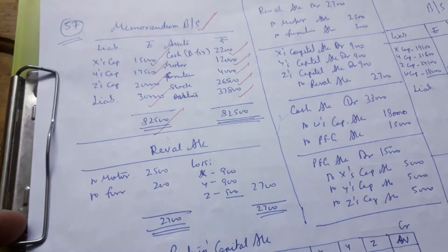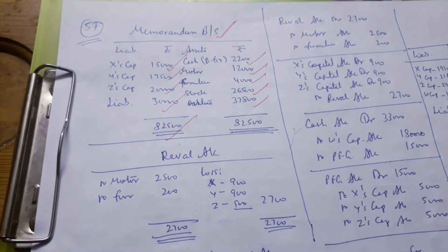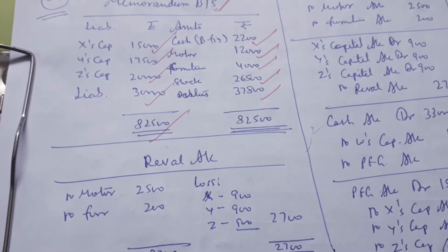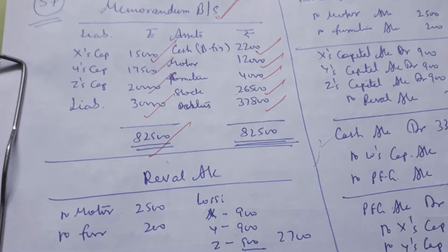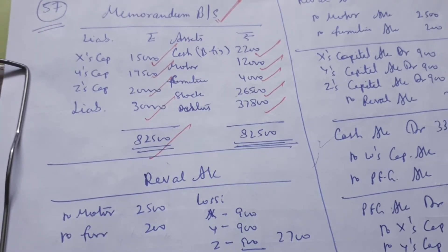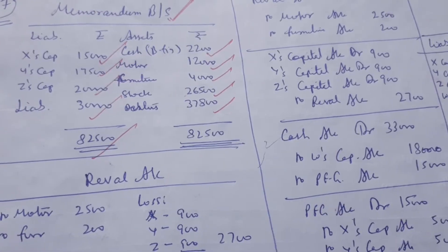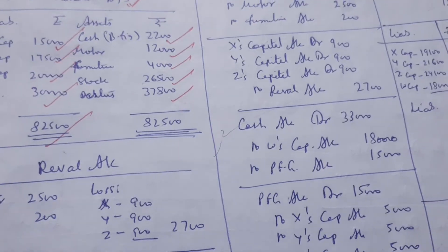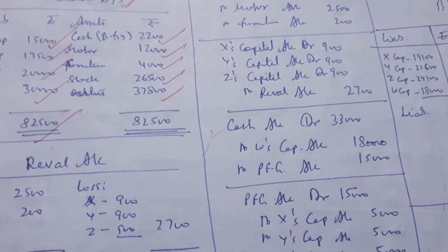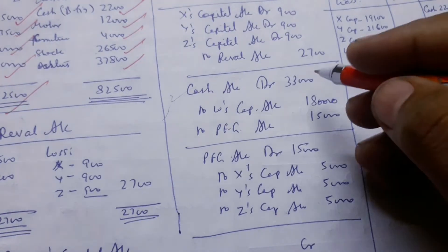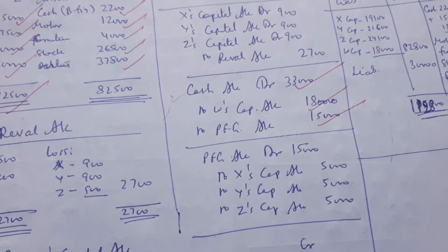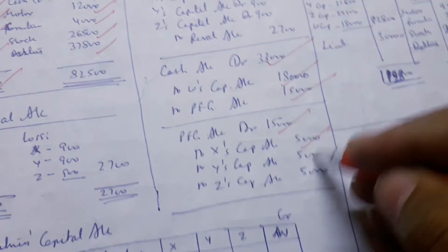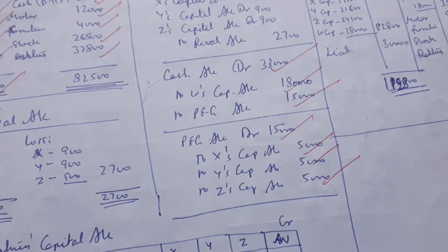We have made a balance sheet for finding cash. Our new partner W has come. The premium is $15,000 and the capital is $18,000. We know the capital and premium entry: cash account is debit to W's capital and premium. The premium is distributed among X, Y, Z, and R equally in their old ratio.